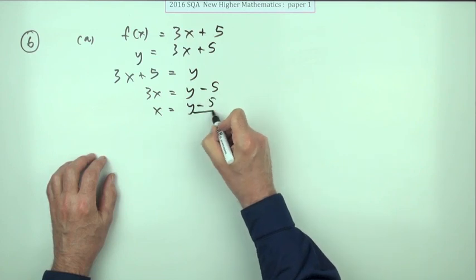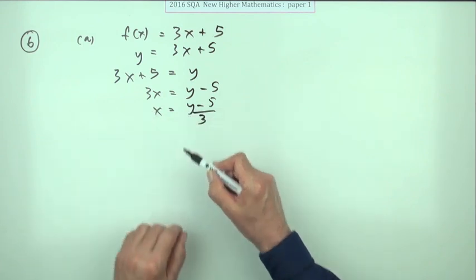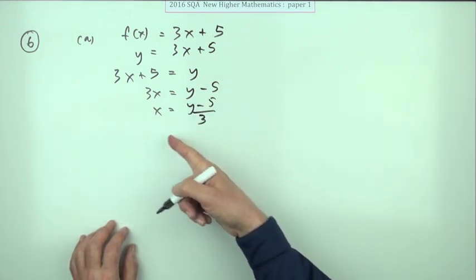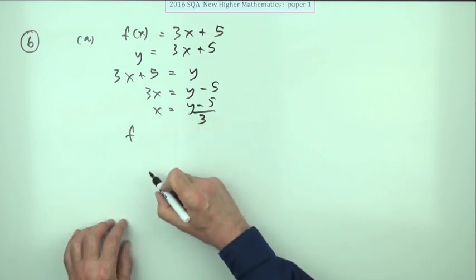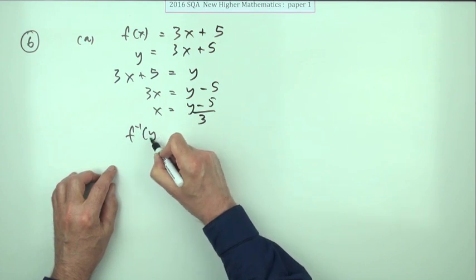Because that says if you feed the answer in, how do you get the original number back out? That's what the inverse function is. So strictly speaking, that function says f inverse acting on the answer.